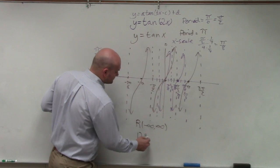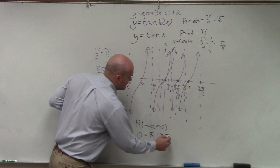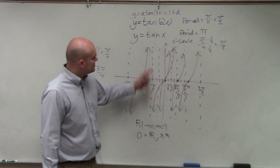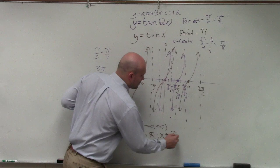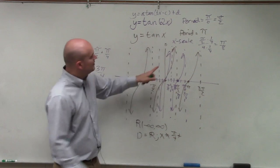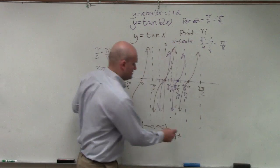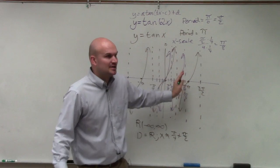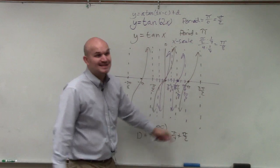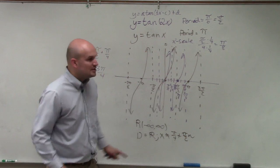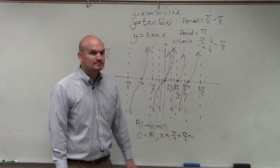Whereas the domain, I'm just going to write all real numbers such that x cannot equal—well, what's our first asymptote? Our first asymptote occurs at pi over 4, correct? So our first asymptote occurs at pi over 4, plus what is our period to our next asymptote? Pi halves. And how many times? So every single time I add pi halves, I'm going to go to the next asymptote. That goes adding pi halves or subtracting pi halves. So since I can add and subtract infinitely many pi halves, I'll use n. So the domain: all real numbers such that x cannot equal pi over 4 plus pi halves n. Does that make sense?